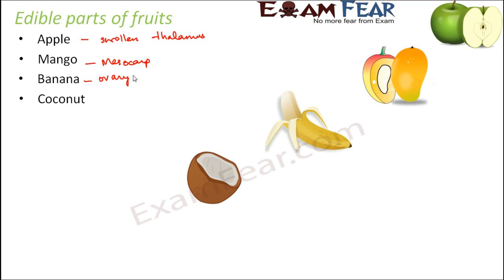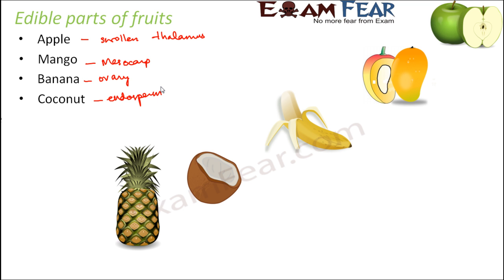In coconut, the edible part is the endosperm. In pineapple, the ovary is the edible part. Pineapple, being a multiple fruit, is made up of many ovaries, and all those ovaries are edible.